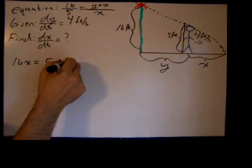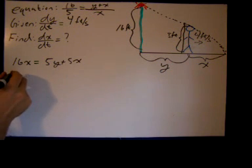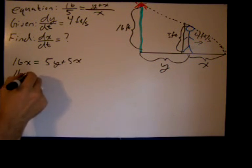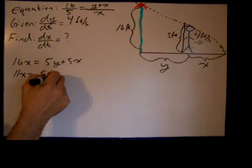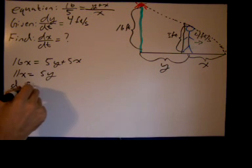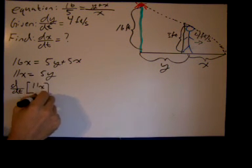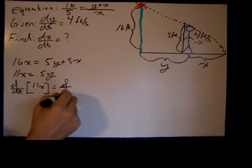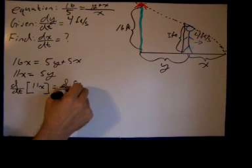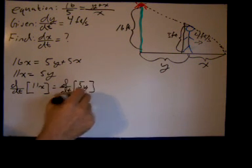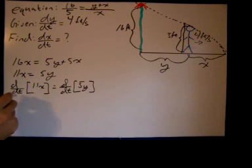Getting all X's on one side, we get 11X equals 5Y. Now we take the derivative with respect to t of both sides, so we want d/dt of 11X equals d/dt of 5Y.